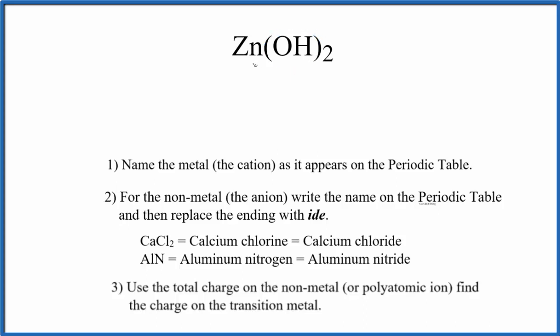So let's first write the name for zinc. That's our transition metal. And then for the OH, this is the hydroxide ion. When you have OH bonded to a metal, this is going to be hydroxide.